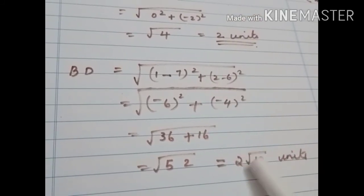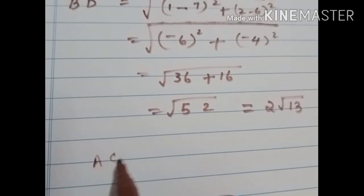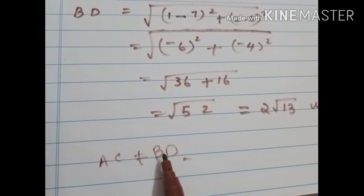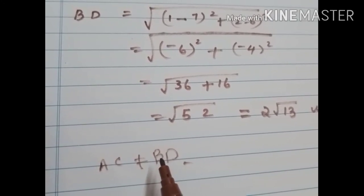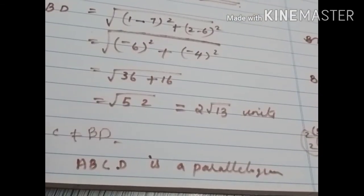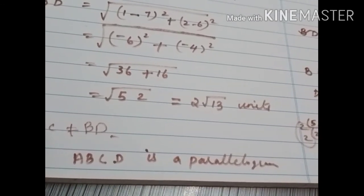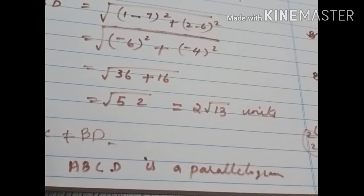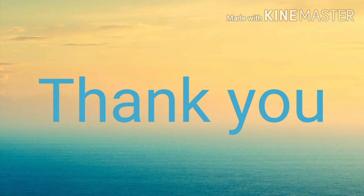The diagonals are not equal, so AC ≠ BD. Opposite sides are equal but diagonals are not equal, so ABCD is a parallelogram. That is the conclusion. That's all for today, thank you, have a nice day.